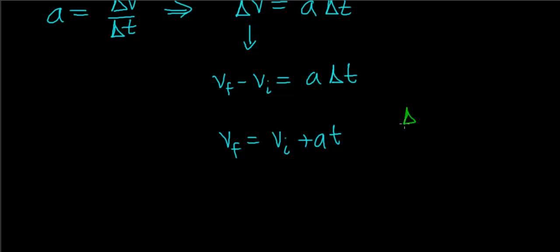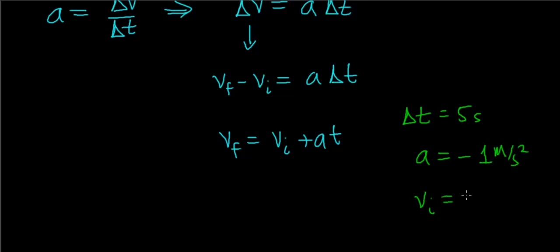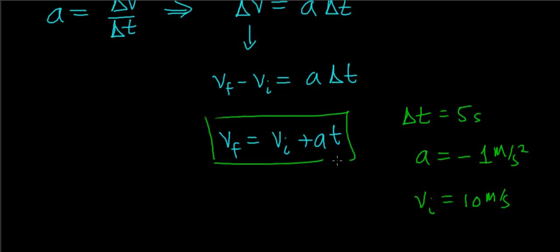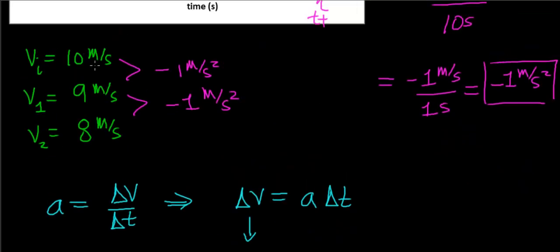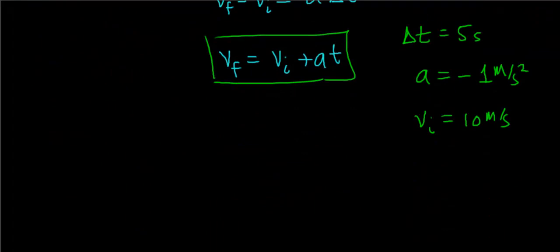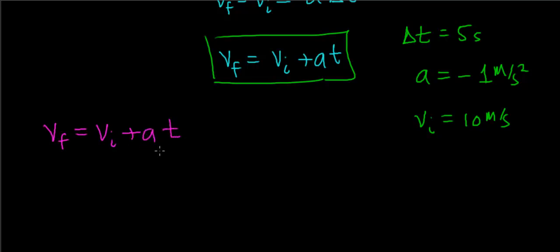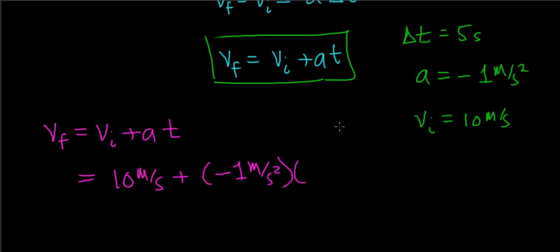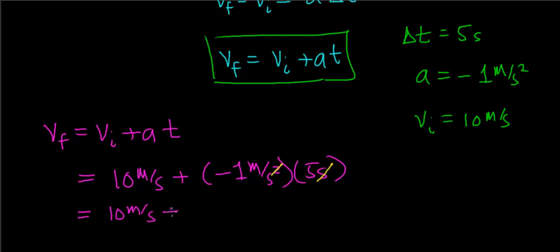Suppose I want to know how fast this object is traveling after a time interval of 5 seconds, while it's accelerating at negative 1 meter per second squared with an initial velocity of 10 meters per second. Using V final equals V initial plus acceleration times time: 10 meters per second plus negative 1 meter per second squared times 5 seconds. The seconds squared cancels with the seconds, giving 10 minus 5, which equals 5 meters per second.